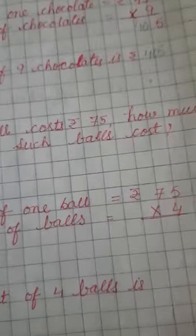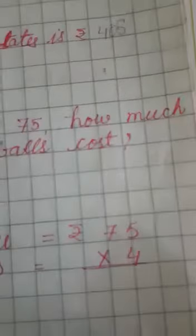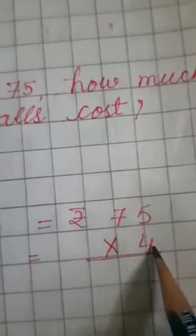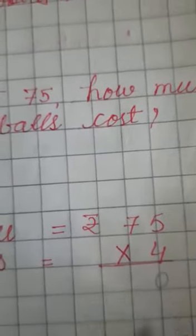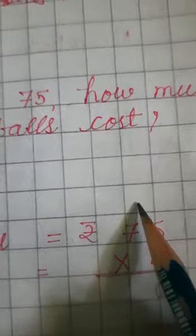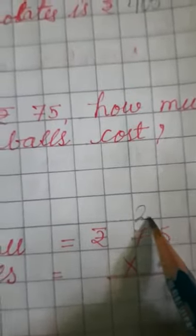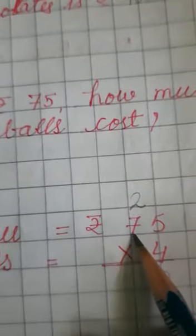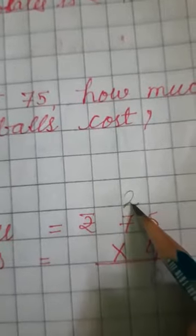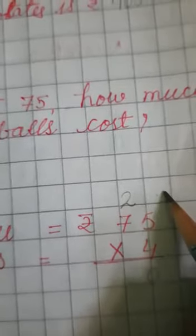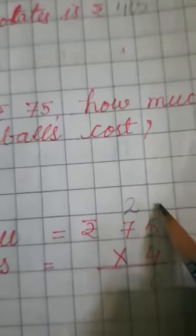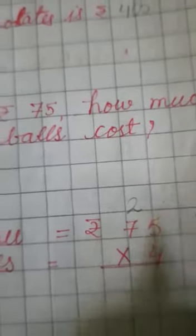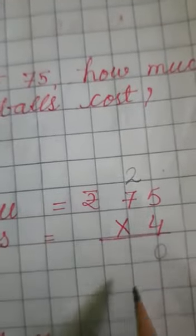Multiply 75 by 4. Four 5s are 20, carry 2. Four 7s are 28, plus 2 is 30. So we get 300.